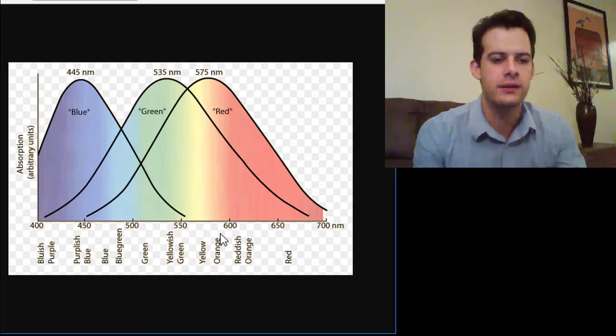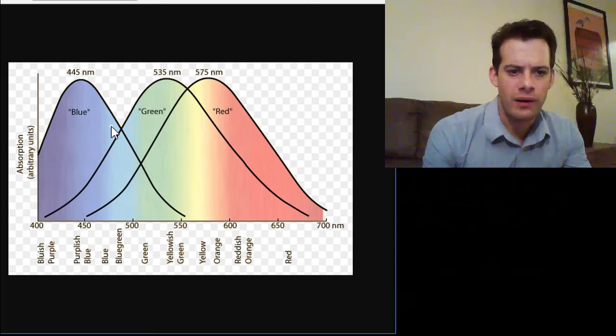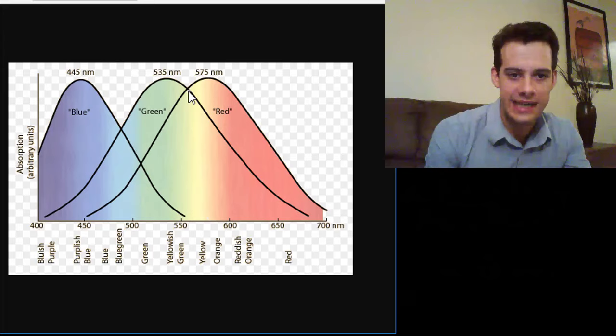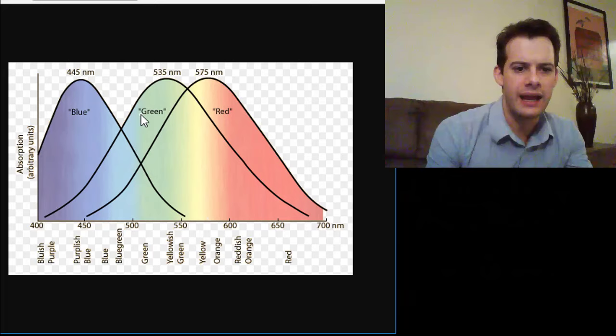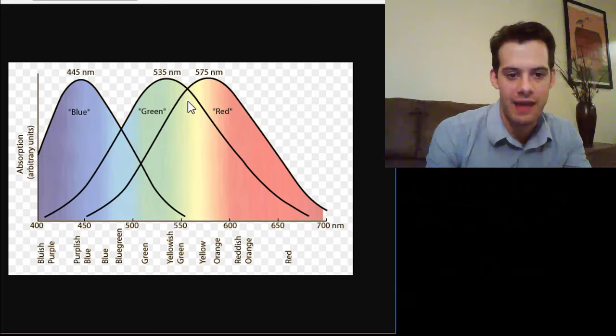Okay, so the idea here is that any of the colors we see are a combination of activation of these three cone types. So we can see here that yellow light is equal parts of red and green light, or the wavelengths corresponding to red and green light, so the cones are equally activated at that point. And that's yellow. You can see blue here at this peak.